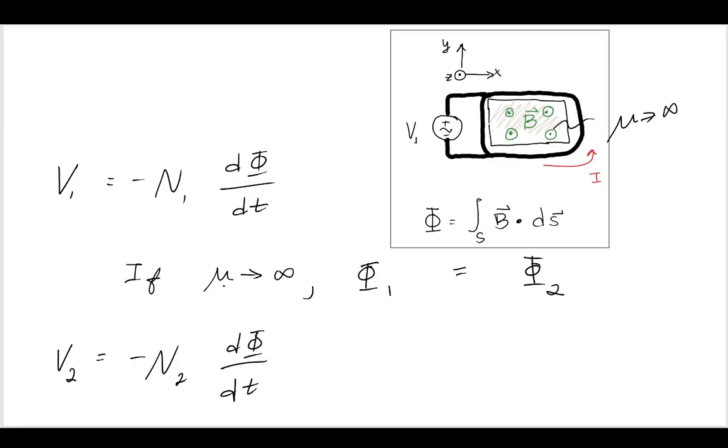Now if they are very strongly linked with this mu material that approaches infinity, then the flux in one is going to be equal to the flux in two, and therefore these two things are going to be equal to each other.